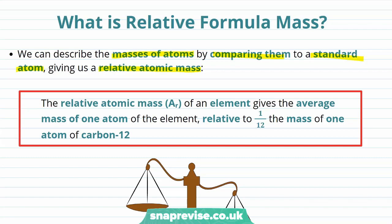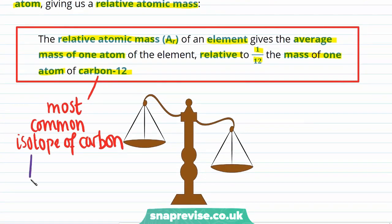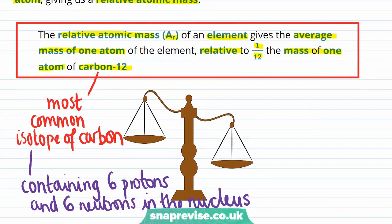We have a formal definition for this, which is that the relative atomic mass, or Ar, of an element is the average mass of one atom of that element, relative to one twelfth the mass of one atom of carbon-12. That's quite a wordy definition, but we can break it down. Carbon-12 is just the most common isotope of carbon, containing six protons and six neutrons in the nucleus of the atom. Carbon-12 therefore has a mass number of 12, remembering that we get the mass number from the sum of the number of protons and neutrons in the nucleus of an atom of that element.